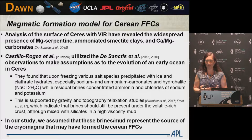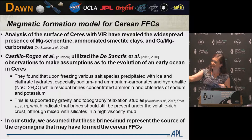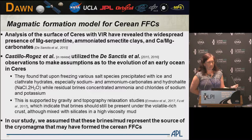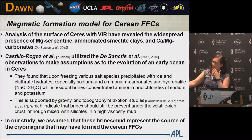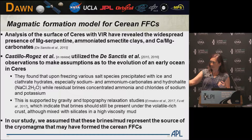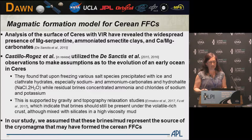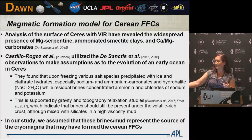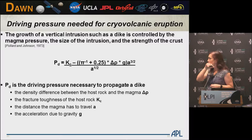We've had a lot of discussion about how probable is cryomagmatism in the first place. An analysis of the surface of Ceres using our VIR instrument has revealed widespread presence of magnesium serpentine, ammoniated smectite clays, and calcium-magnesium carbonates. Various members of our team — Julie and Christina — used these observations to model the evolution of an early ocean in Ceres and found that upon freezing, we get various salt species and residual brines. This is supported by gravity and topography studies suggesting there could still be brines in the interior of Ceres, mixed with silicates to make a high-viscosity mud — so instead of an ocean world, we have a mud world. In our study, we assume this muddy brine is the source of the cryomagma that might have formed the Cerean floor-fractured craters.